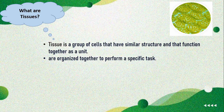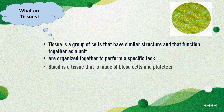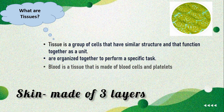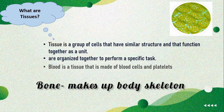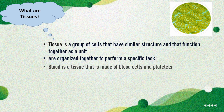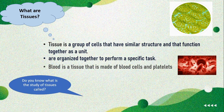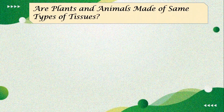An example of tissue is blood, which is made up of blood cells and platelets. Another example is skin, which is a tissue made up of three different layers: epidermis, dermis, and hypodermis. Bone is also a living tissue that makes up the body's skeleton. The study of tissues is called histology.